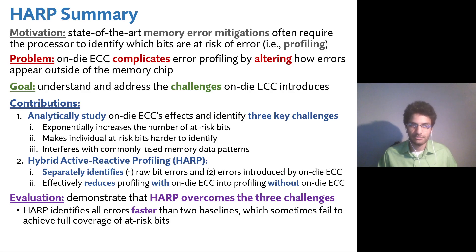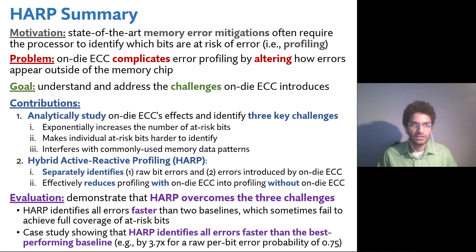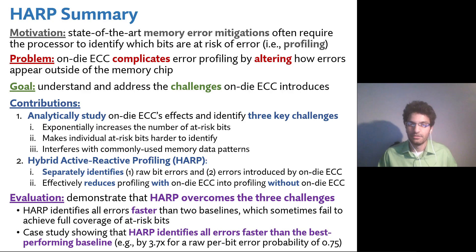We show that HARP identifies all errors faster than two baseline profiling algorithms, which sometimes fail to achieve full coverage of at-risk bits. We provide a case study showing that HARP identifies all errors faster than the best-performing baseline — for example, by 3.7x for a raw per-bit error probability of 0.75.